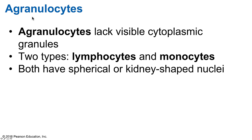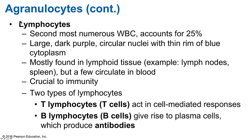Agranulocytes lack any visible cytoplasmic granules. There are two types: lymphocytes and monocytes. Both have either a spherical or kidney-shaped nucleus that is visible. After neutrophils, lymphocytes are the second most numerous white blood cells, accounting for 25–45% of all WBCs. They have a giant spherical nucleus that is sometimes slightly indented, stains purple, and occupies most of the cell's volume, leaving a small area of cytoplasm visible as a thin blue rim.